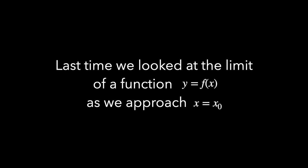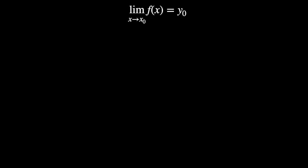And what we discovered was the limit from the left and the limit from the right had to both exist and they had to be equal. And then we could say the limit as x goes to x sub 0 of f of x is y sub 0.